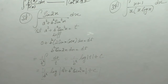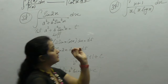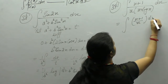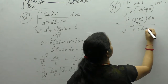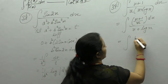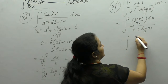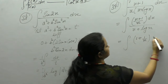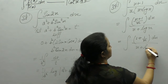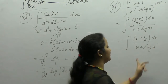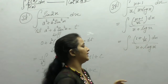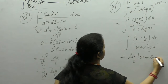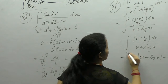Integration of (x + 1/x) upon (x + log x). We can write x + 1/x as: derivative of x is 1 and derivative of log x is 1/x, so 1 + 1/x. In the denominator x + log x, derivative of x is 1 and derivative of log x is 1/x. It is of the form f'(x)/f(x), so the answer is log of (x + log x) plus c.